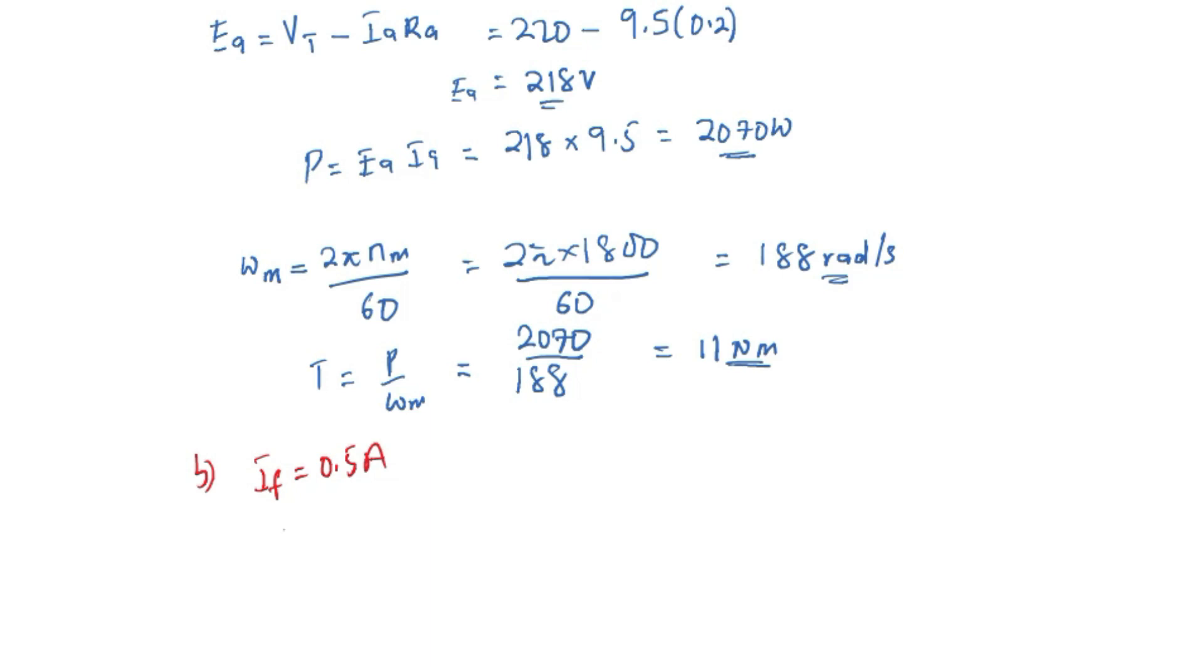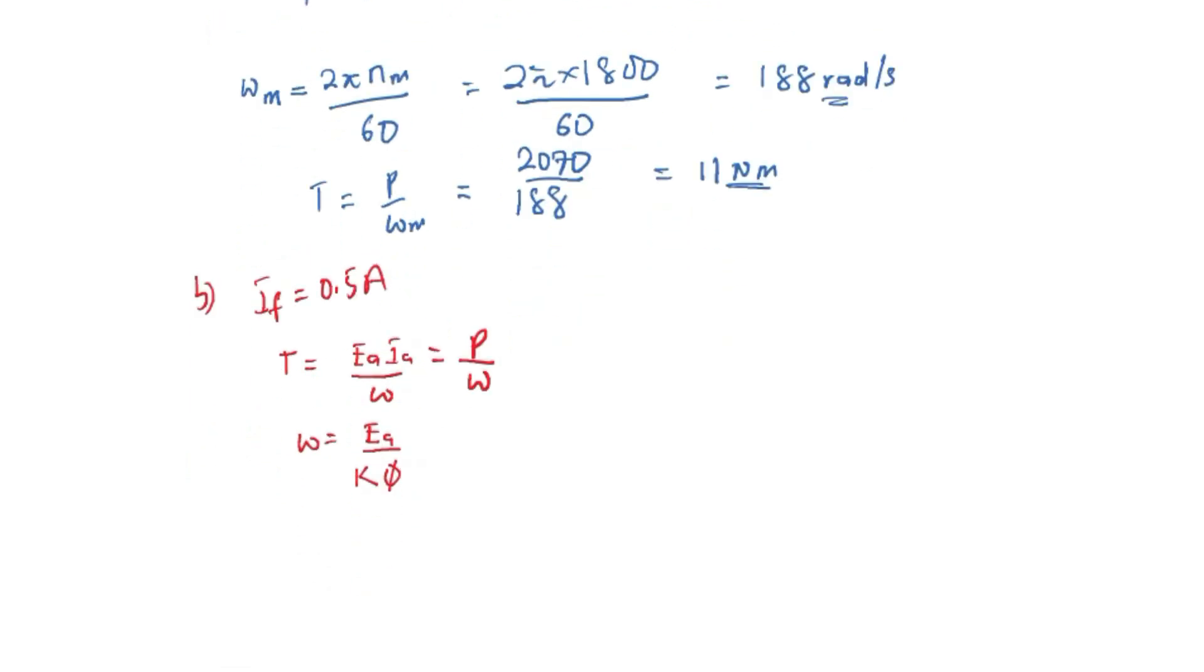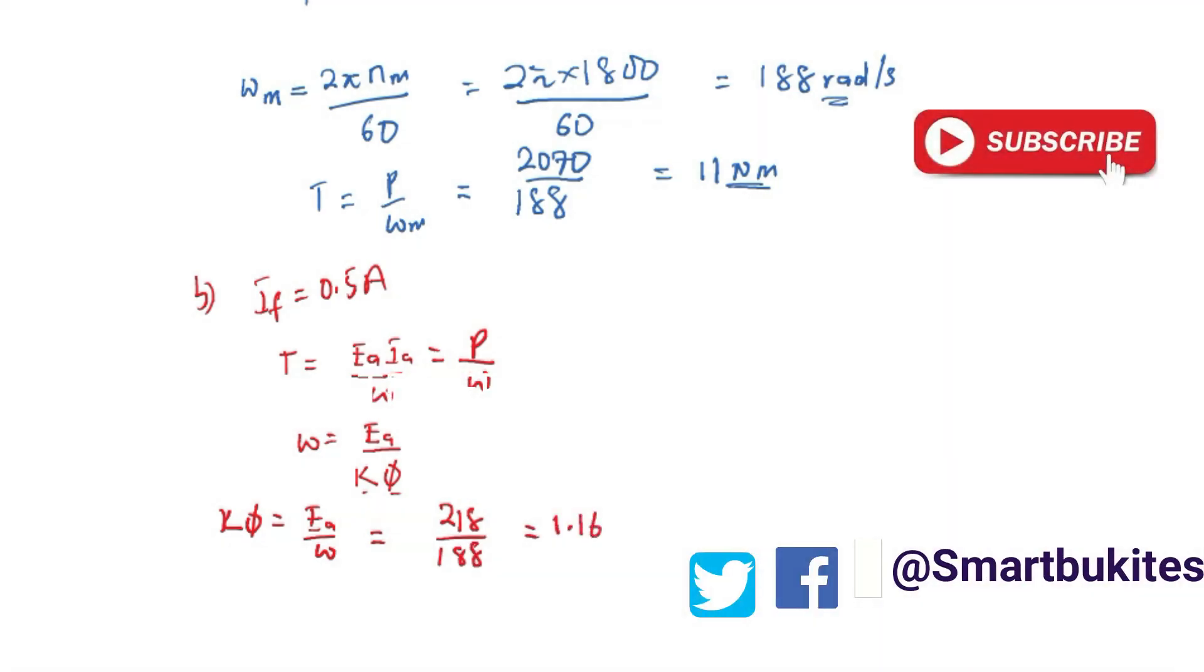So we know that torque is given by EA times IA over omega, which is the power over omega. But omega is EA divided by K phi, where K phi is a motor constant. Now K and phi is constant and it doesn't change, so that means K phi is going to be EA over omega, which is 218 divided by 188. We are going to obtain 1.16.